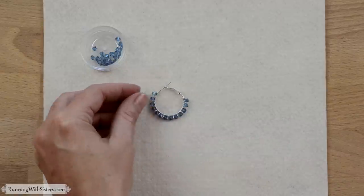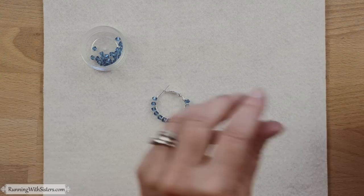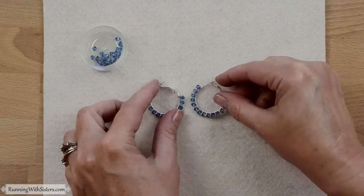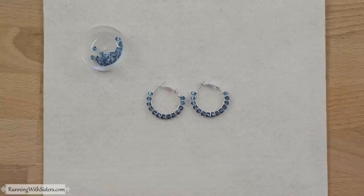And now all you need to do is bead your second hoop, just like we did the first one. And you will have your pair of crystal wrapped earrings.